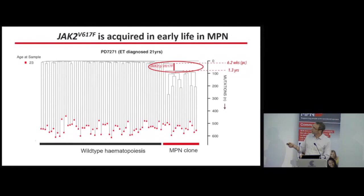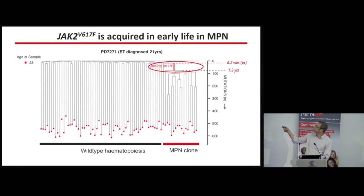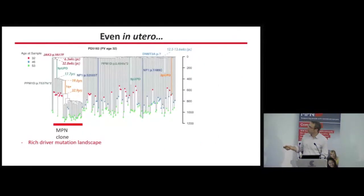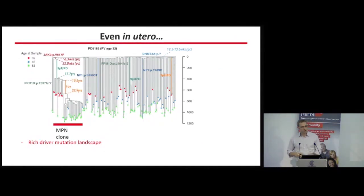The really interesting finding: a patient who had a blood sample taken in clinic aged 23 with an MPN actually had the JAK2 mutation that developed either in utero — 6.2 weeks after conception — or before the age of one. Even more remarkably, in a 50-year-old patient the mutation definitely occurred in utero. So the JAK2 mutation is occurring many many years before people present with myeloproliferative neoplasm.